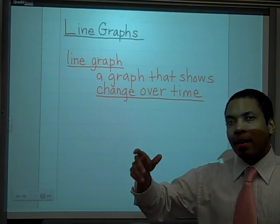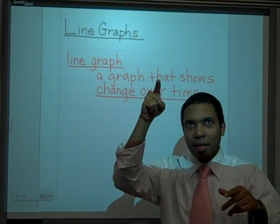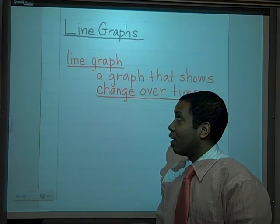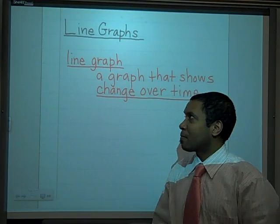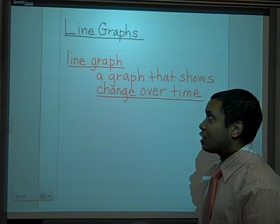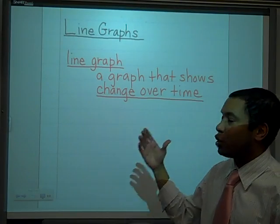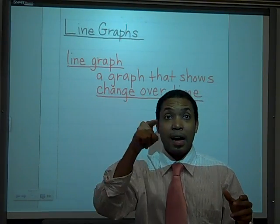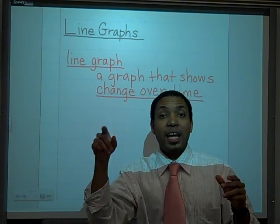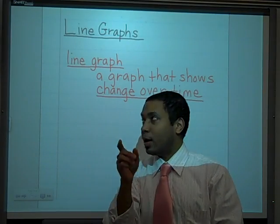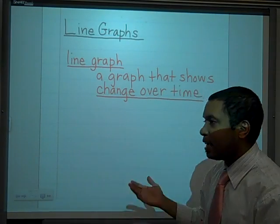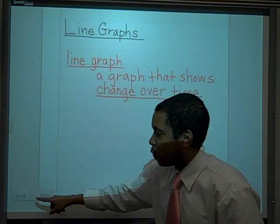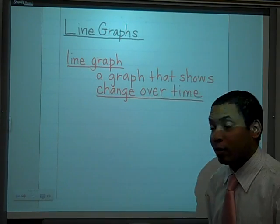A line graph — you've seen many of them before. It's the lines with the points on the graph, and the definition of a line graph is a graph that shows change over time. Let's take a look at a line graph and figure out the parts so we can interpret it and learn how to read it very clearly.